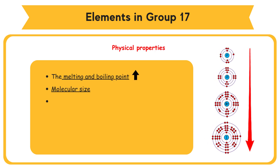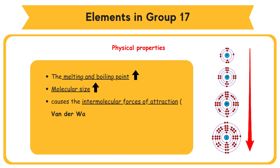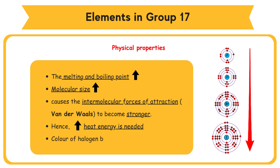Molecular size of halogen increases, and causes the intermolecular forces of attraction — van der Waals forces — to become stronger. Hence, more heat energy is needed to overcome the intermolecular forces of attraction between the molecules during melting and boiling.